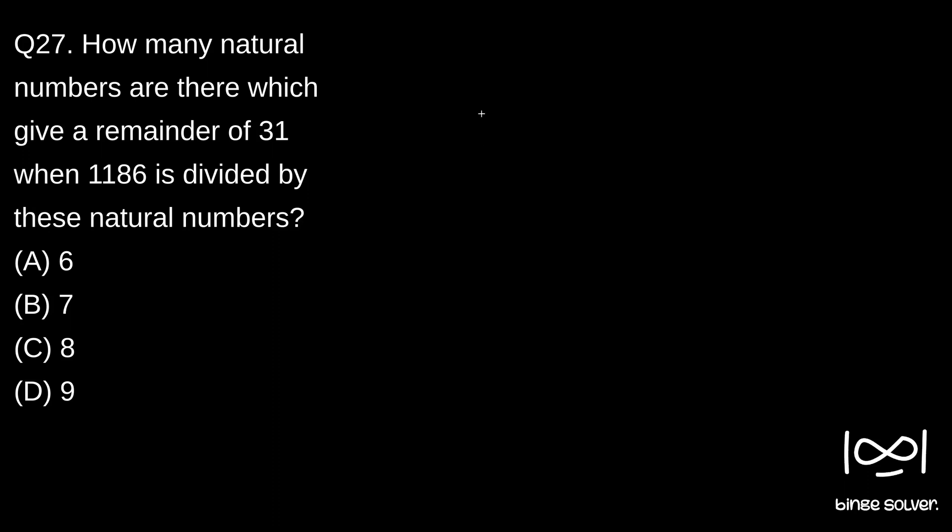So 1186 divided by a natural number gives remainder 31 means if our natural number is P, it will be of the form P×K plus 31 where K is any positive integer.